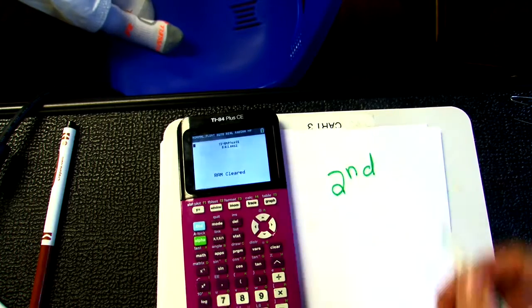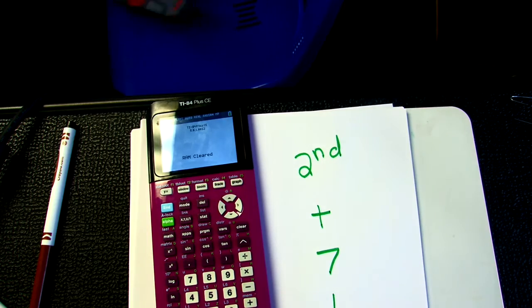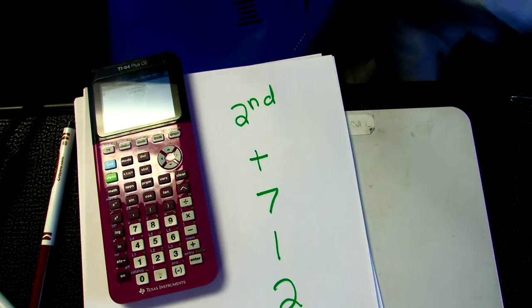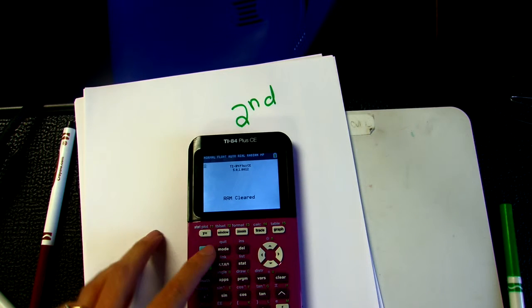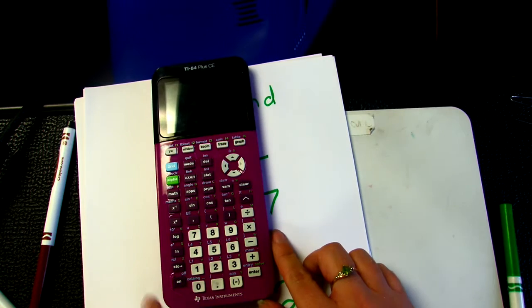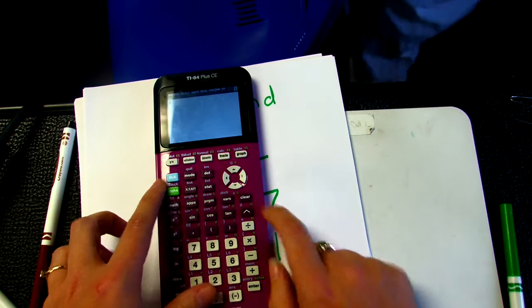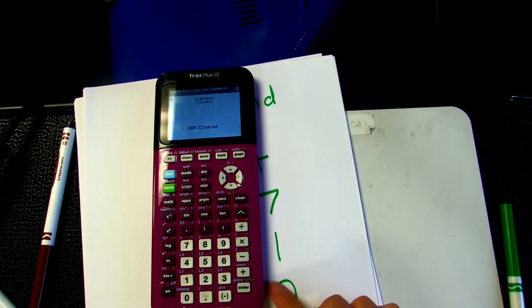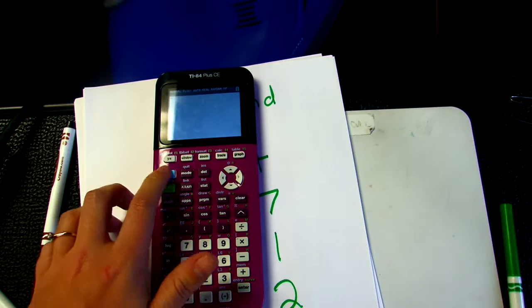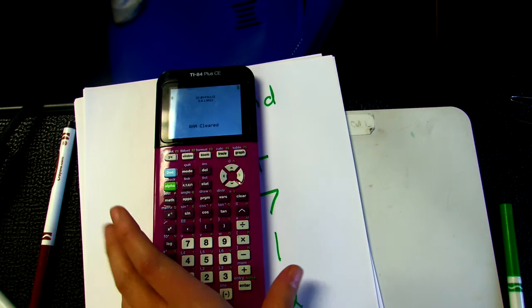Second, Plus, seven, one, two. So here's my calculator. I turn it on, and then I'm going to hit Second, Plus, seven, one, two, and it will say RAM cleared. So one more time: Second, Plus, seven, one, two.